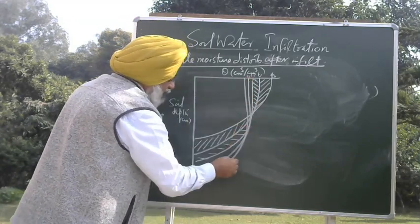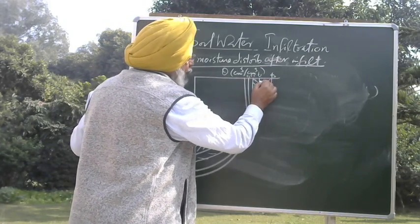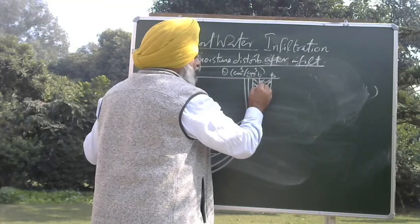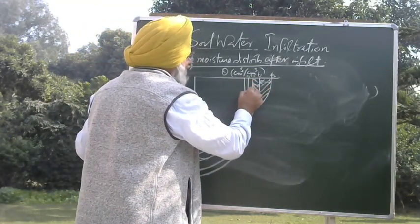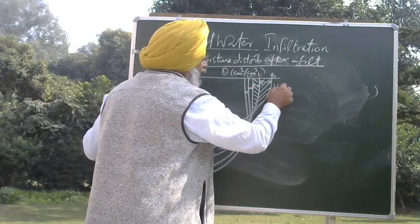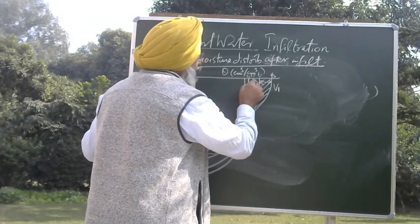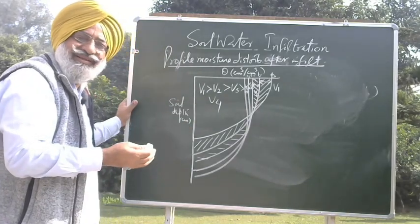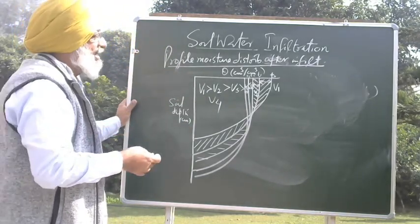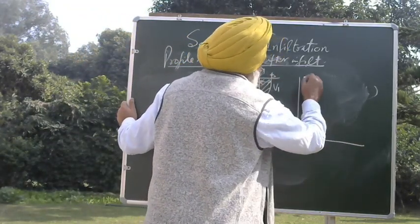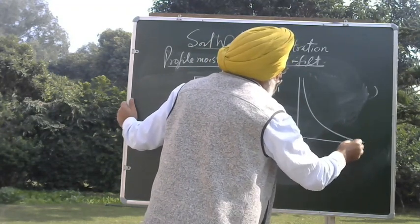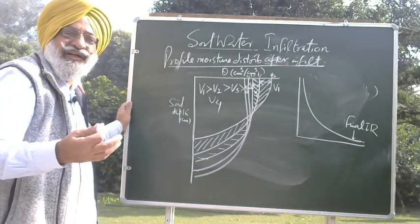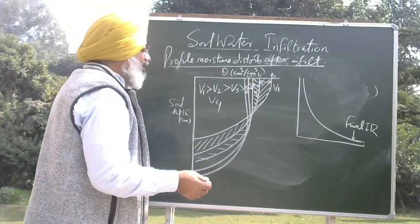From time t0 to t1, the volume of water drained was large, then this drained volume became smaller, then still smaller, and still smaller. So v1 is greater than v2, greater than v3, greater than v4 — meaning as time passes, the drainage goes on decreasing. That is why we say the infiltration rate becomes constant. This is your constant or final infiltration rate. We also use the term final intake rate — it is the same thing.